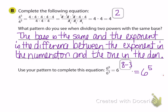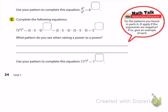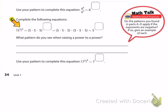In Part A we multiplied powers; in Part B we saw a pattern for dividing powers. In Part C we're going to do something different. We have a power — five to the third — and the parentheses say that five to the third is being raised to the power of two. So we've got a power raised to another power. Go ahead and fill in what you see happening in these blanks.